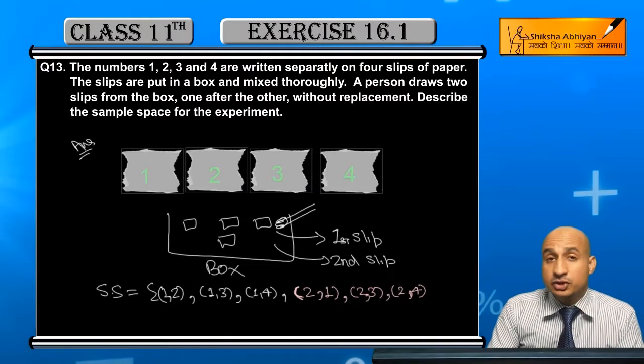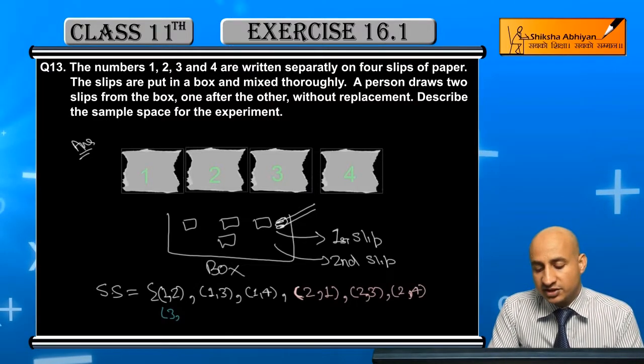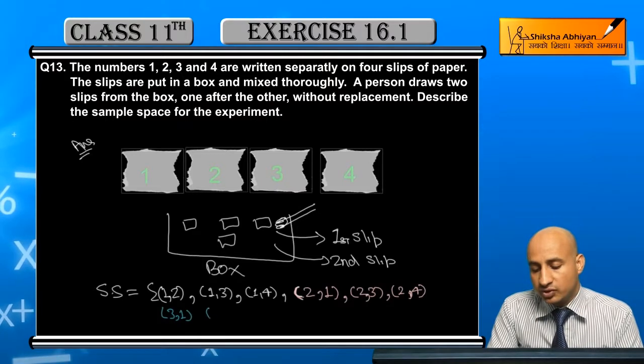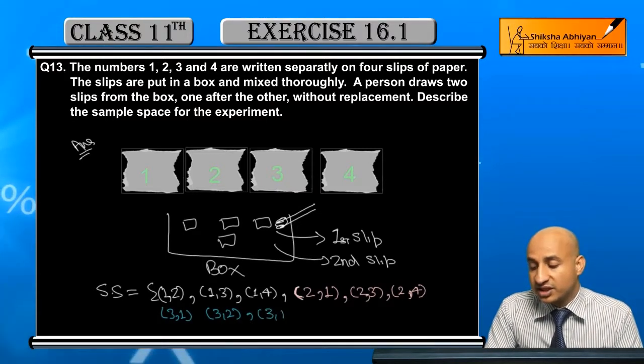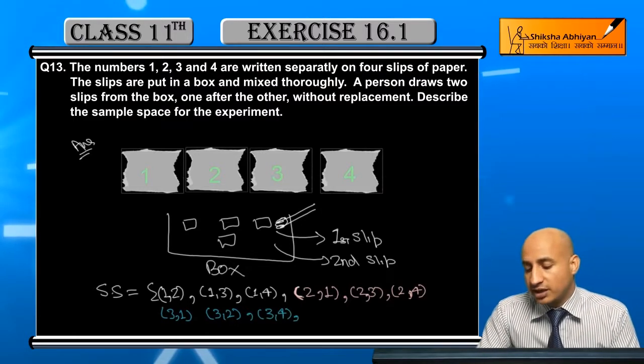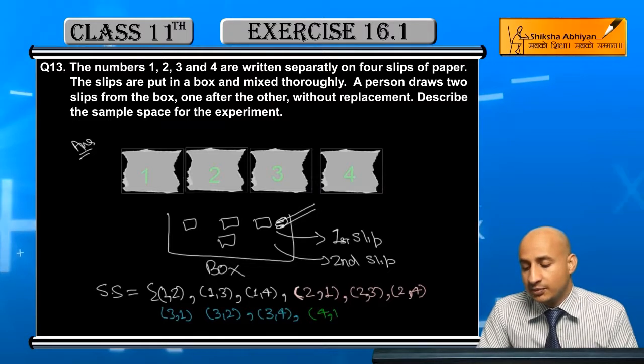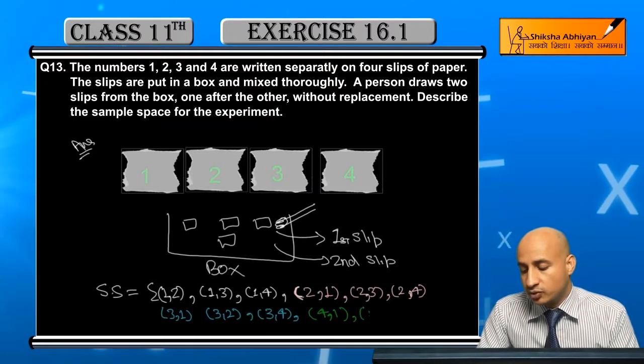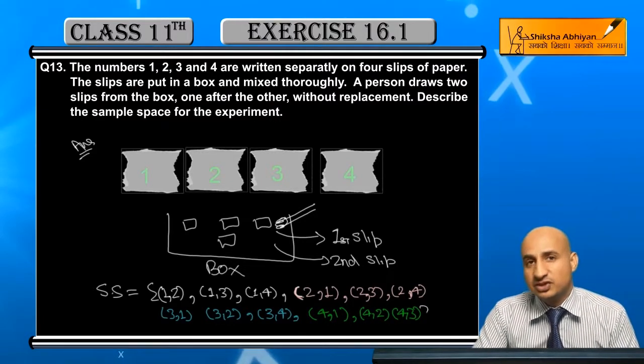This could be that first time number three slip, second time number one slip, or three with two slip, or three with four slip. This could be number four with one slip, then number two with one slip, then number four with two, and number four with three. This is the possible sample space.